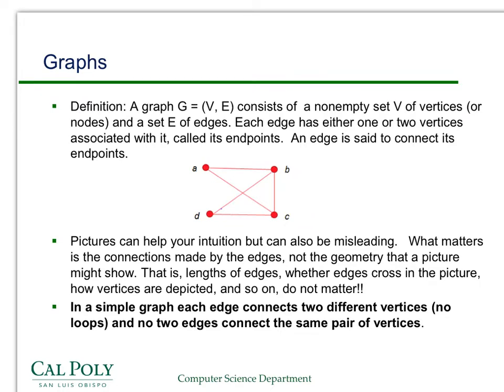One thing about graphs that can be a little confusing when you're first learning about them is that the pictures really can be misleading. What matters is only what the edges connect, not the geometry of the picture. For example, in this picture, these edges cross. That doesn't really mean anything. You could draw the picture where the edge between A and C goes around. So you have to be careful whenever you're trying to draw conclusions from looking at the pictures. But they are very helpful in terms of developing your intuition. Just remember that the geometry of the picture might not reflect what's actually going on in the graph.